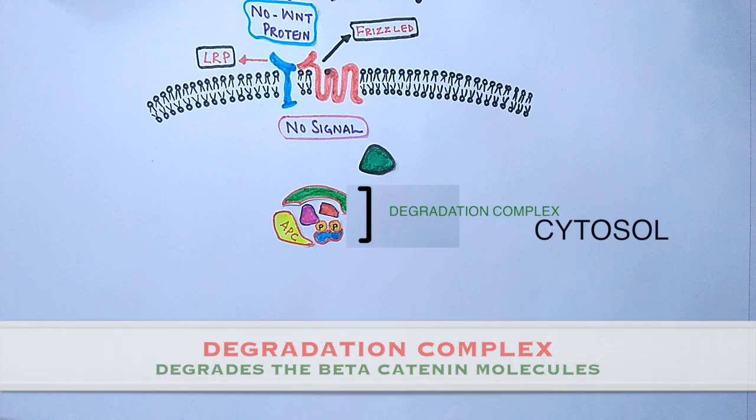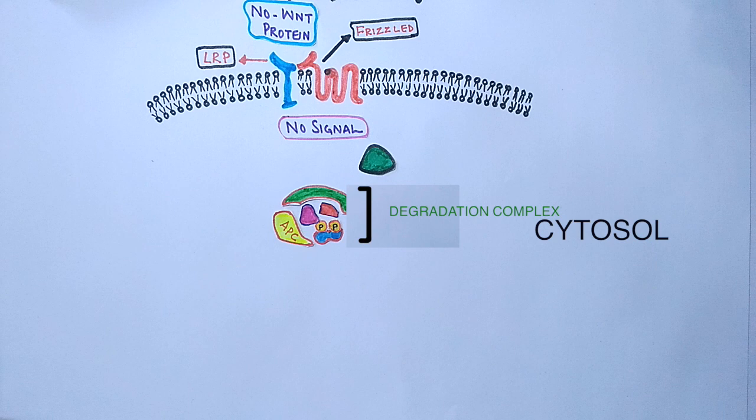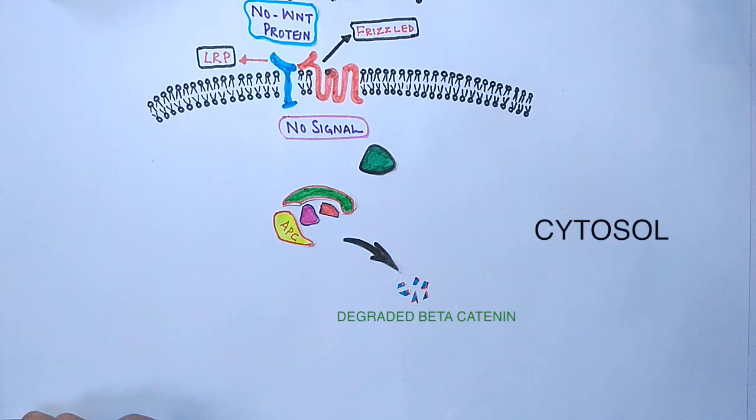The CK1 protein and GSK3 protein both phosphorylate the beta-catenin, and then beta-catenin is ubiquitinated, which is then subjected to degradation by proteosomes as shown in the diagram.